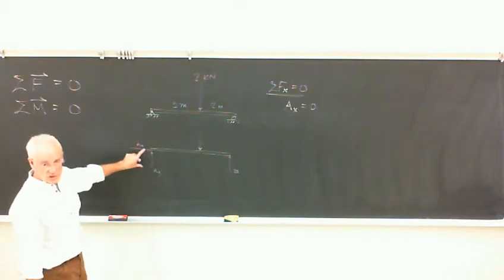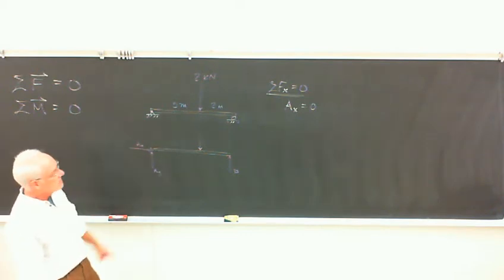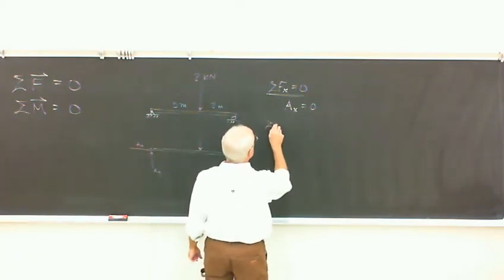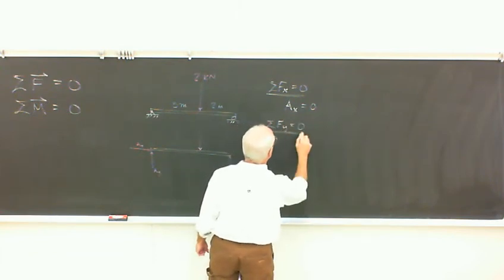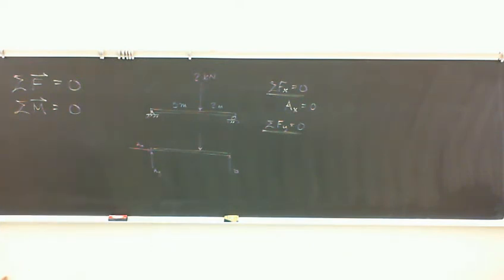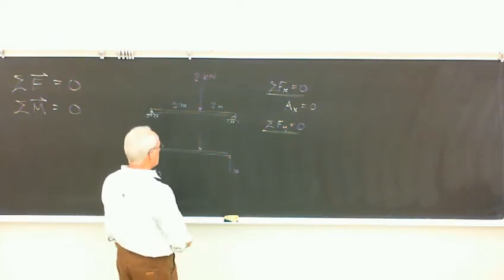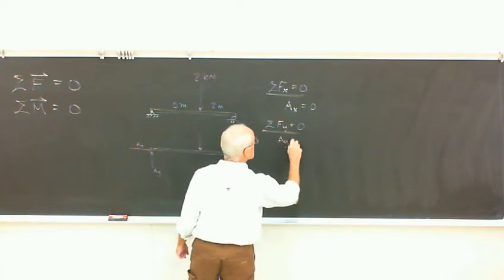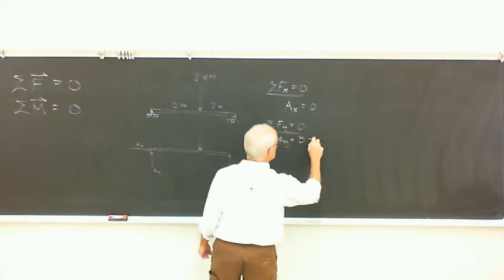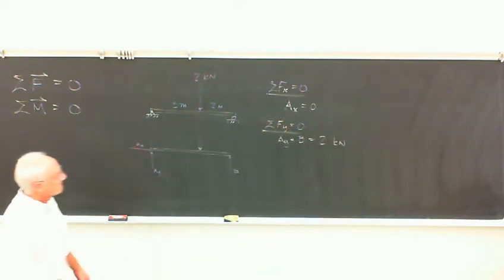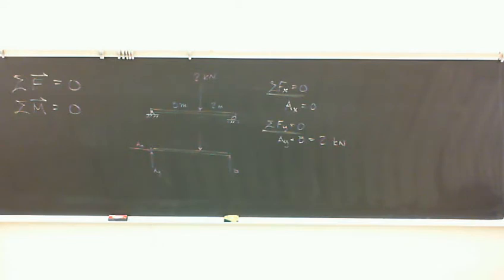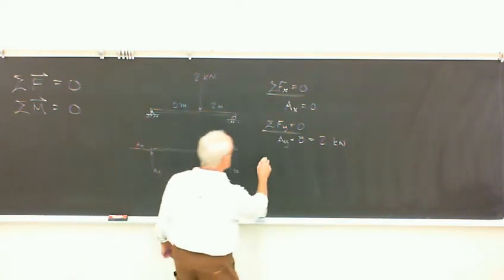Summing forces in the y-direction: my suggestion, since our sums always go to zero, is to set them up so all the up forces equal all the down forces — then there are no minus signs, which makes things a little easier. Sometimes minus signs are what get sticky in problems. In this case, it's just the up forces equal the down forces. With one equation and two unknowns, we're not done yet — then we pull in the moment equation.